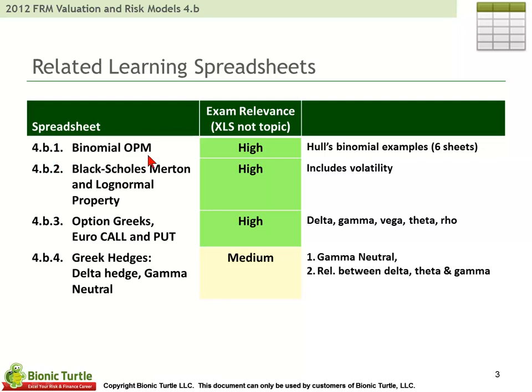4B1 is the Binomial Option Pricing Model. That's a workbook that contains several worksheets because we really follow the John Hull methodology of starting with a very simple example — a simple tree — and then moving into some more intermediate type trees. There's nothing really advanced here; our trees don't get too complicated. There's just one workbook with several worksheets applying binomial examples — looks like six sheets in total.